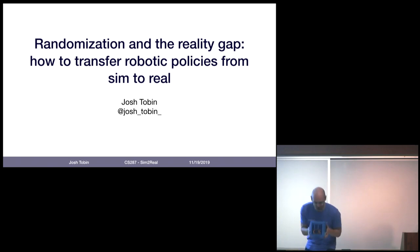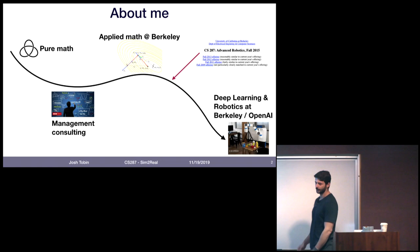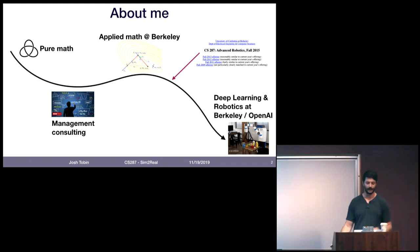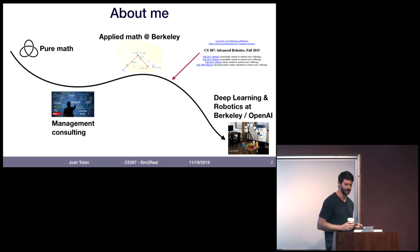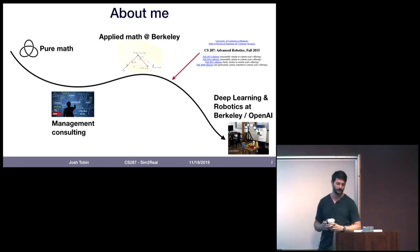Thank you, Peter. I'm really excited to be here. Before I dive into the topic of today's talk — Sim2Real — just a bit about me: my background was in pure math. Then I decided I wanted to do stuff in the real world, went into consulting for a little bit, but missed being technical. So I came back to Berkeley to do my PhD in applied math. But little did I know I would take this class — CS287 — and that changed my trajectory from math to robotics and artificial intelligence, spending time at OpenAI in Berkeley.